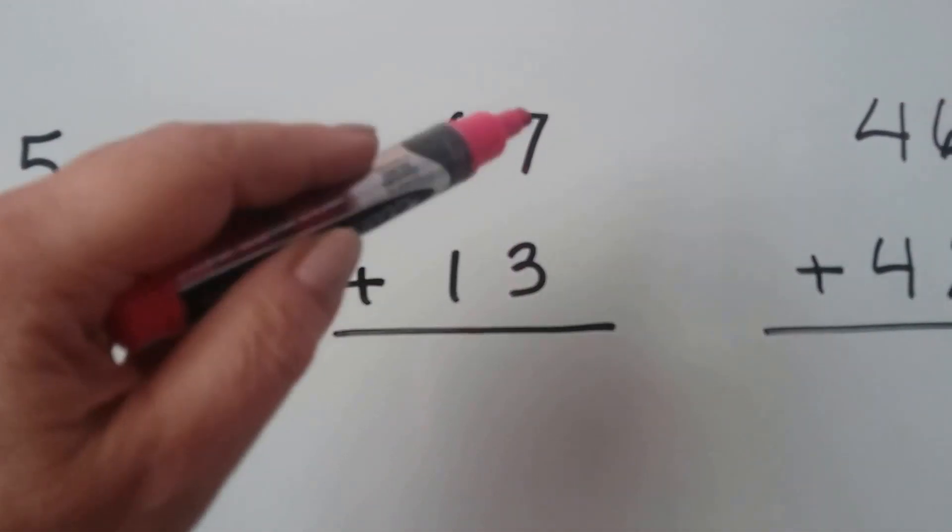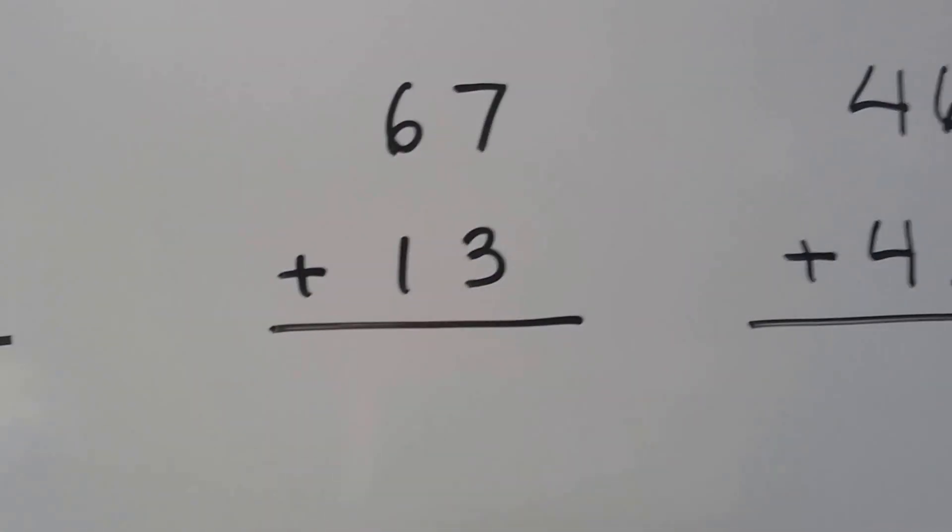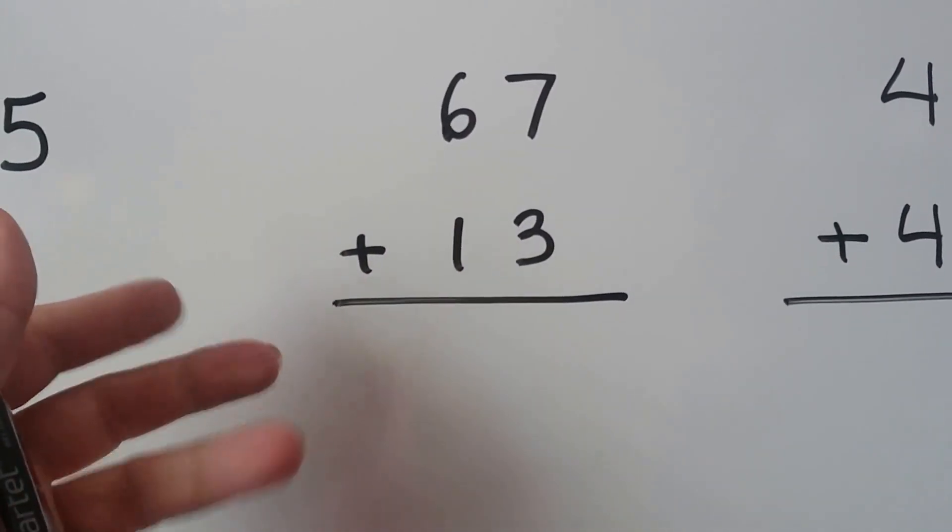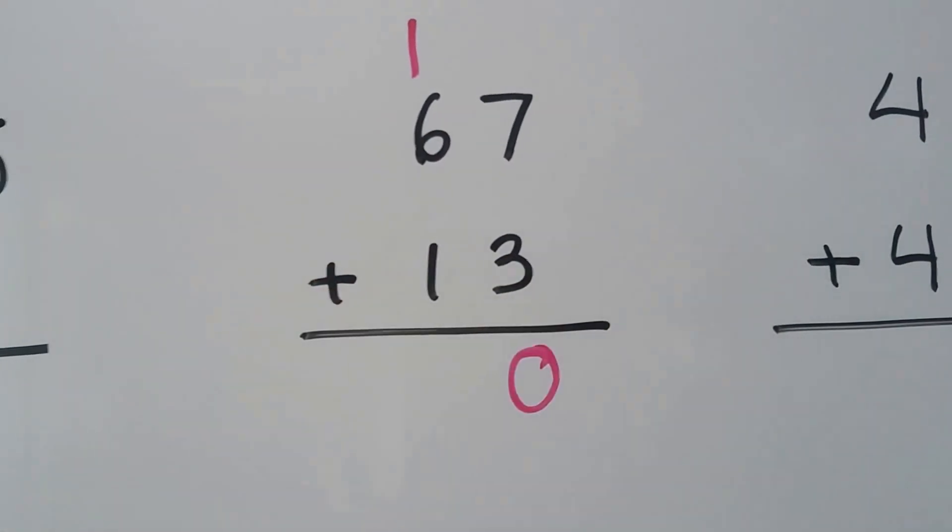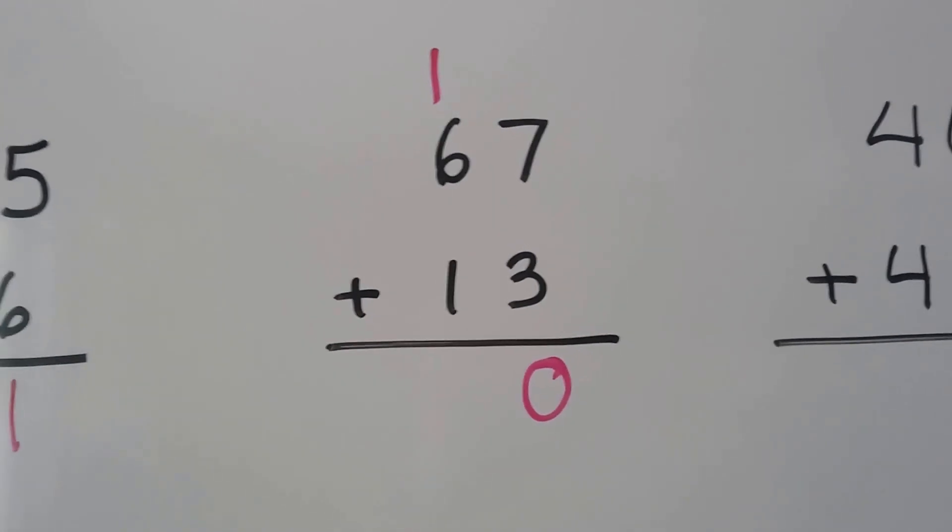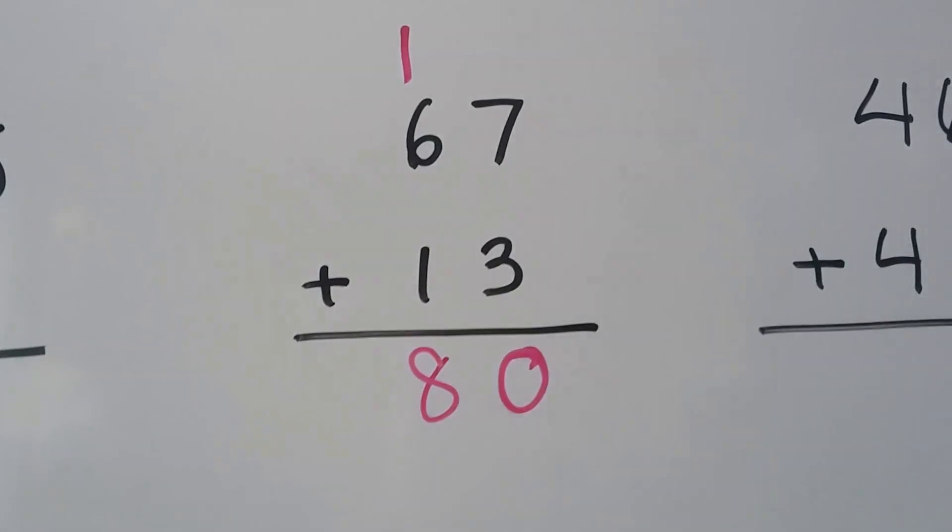We start with the ones place. We start with the larger number 7 and count on the 3: 7, 8, 9, 10. We regroup the 1 from the 10 here and the 0 down here. We add the tens place: 6, 7, 8. We have 80.